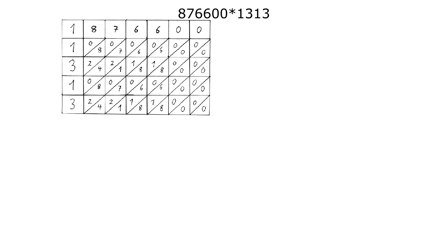You simply take the numbers and divide the fields with a diagonal line. Now you can start adding and carrying again as we did before. It really is super easy. The final result is 1,150,975,800.